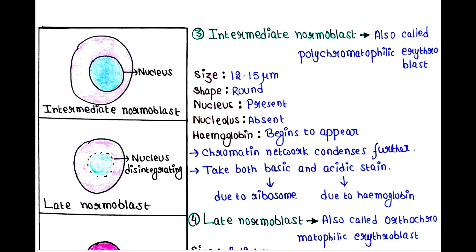Next is the intermediate normoblast, also called polychromatophilic erythroblast. Size: 12 to 15 micrometers, a little bit smaller than the previous one. Shape: round. Nucleus: present. Nucleolus: absent. Hemoglobin begins to appear in this stage, and the chromatin network condenses further. It takes both basic and acidic stain — basic stain is due to ribosome, and acidic stain is due to hemoglobin.